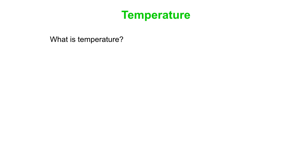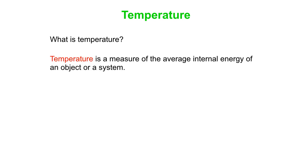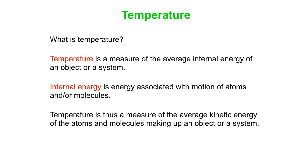What exactly is temperature anyway? Well, temperature is a measure of the average internal energy of an object or a system. Internal energy is energy associated with the motion of atoms or molecules. So temperature is a measure of the average kinetic energy of the atoms and molecules making up an object or a system. And we'll have more on that in our next video.